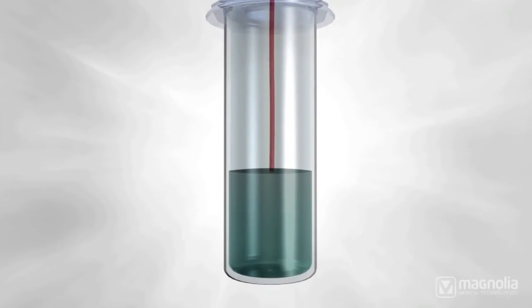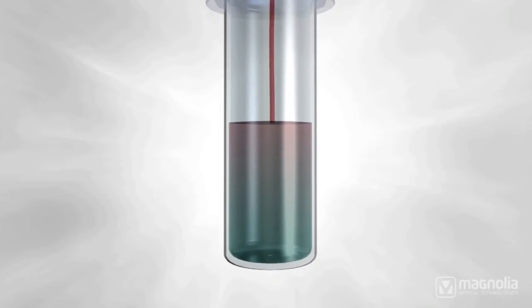Steropath is indicated to reduce the frequency of blood culture contamination by diverting and isolating initial venipuncture blood, which can contain skin-residing contaminants.